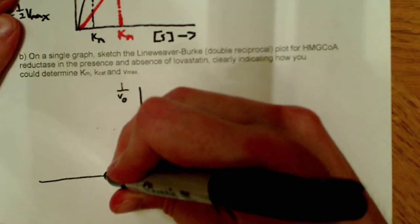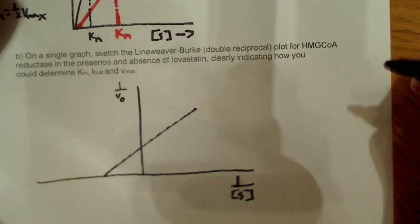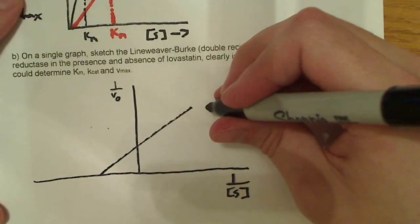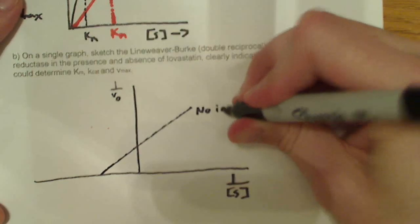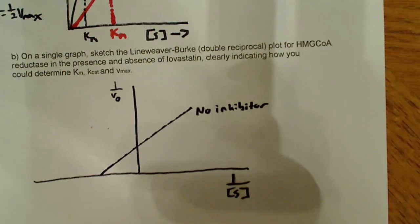So I'm just going to kind of arbitrarily draw this, because they're not giving us any particular values. We don't know for sure where this is going, but we do know this. We know that this is going to be no inhibitor. No inhibitor.